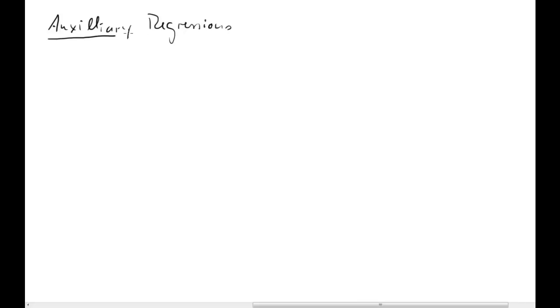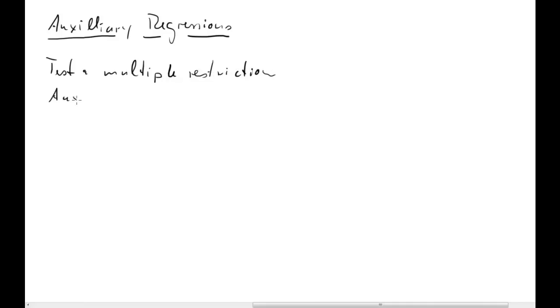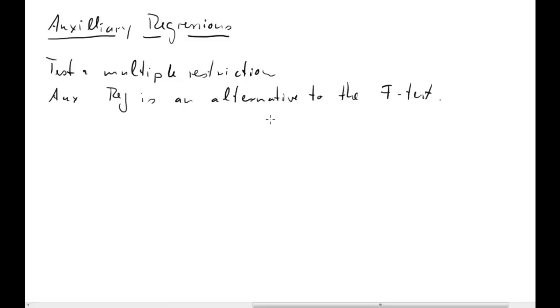In this clip I will review some aspects of auxiliary regressions. I introduced them to do something we already know how to do — to test a multiple restriction. The auxiliary regression is an alternative to the F-test. Without any real advantages, I introduce it here so you understand the problem we are testing; it's just a different methodology. Whenever you want to test multiple restrictions, you can also use an F-test.